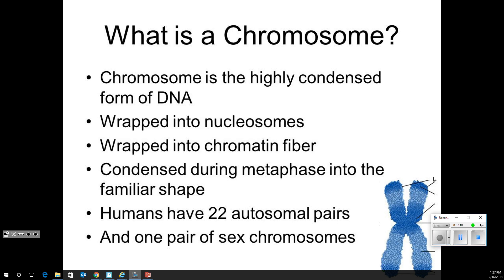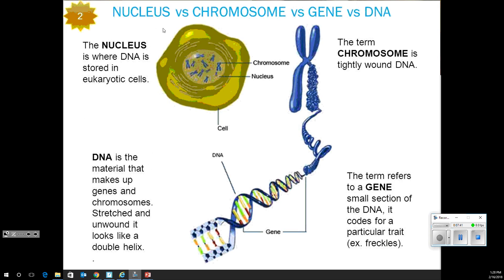So what is a chromosome? Basically it's a highly condensed version of DNA, wrapped into what we call a nucleosome, into an X or Y form, condensed during metaphase into the familiar X shape. Humans have 22 of these pairs plus one pair of sex chromosomes. Nucleus versus chromosomes: the chromosome is tightly wound DNA, and the nucleus is where the chromosomes are stored. DNA is the material that makes up the genes and chromosomes — stretched and unwound it looks like a double helix. The term gene refers to a small section of a chromosome — a trait for freckles, red hair, and so on.